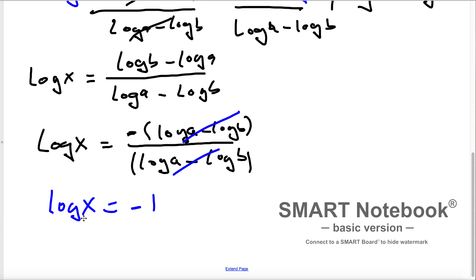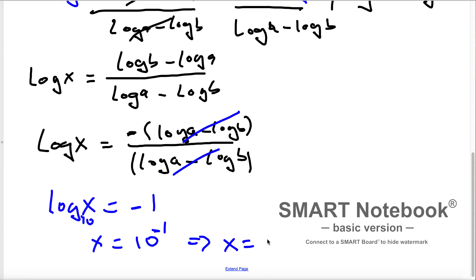This is a common logarithm with base 10. So x can be equal to 10 to the exponent minus 1. Respectively, x is going to be 1 over 10. So this is the solution for this equation.